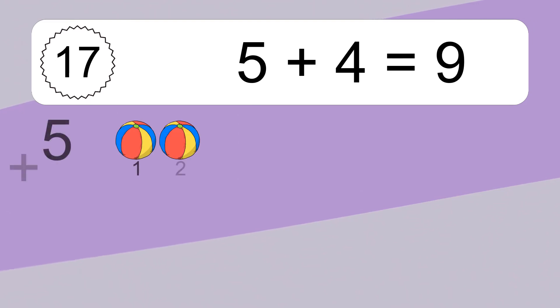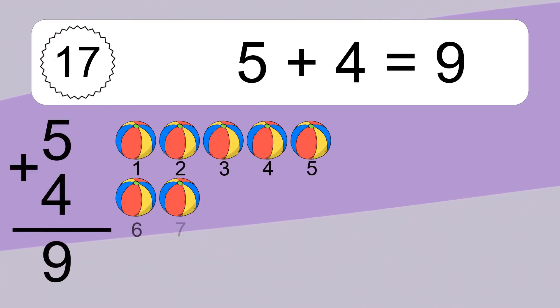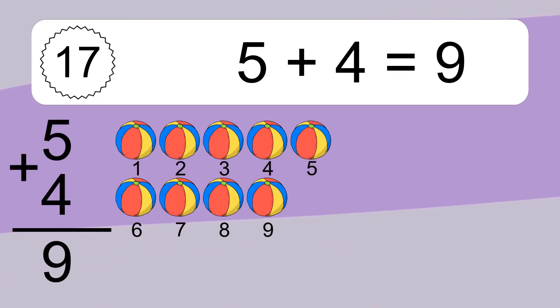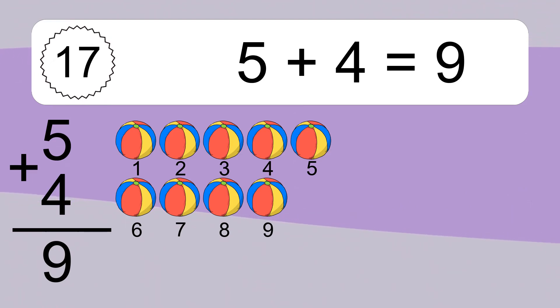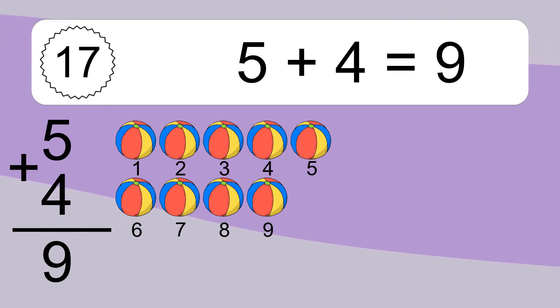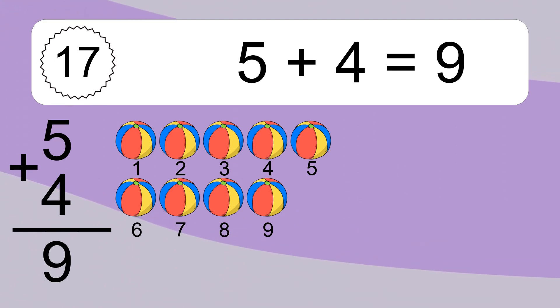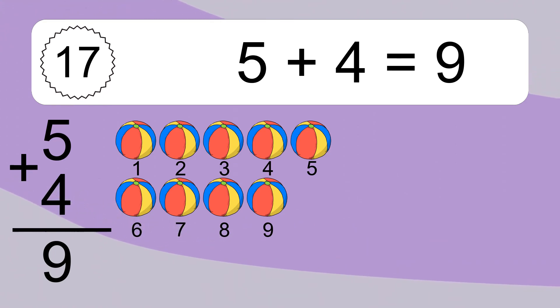5 plus 4 equals what? 5 plus 4 equals 9. Let's count it. 1, 2, 3, 4, 5, 6, 7, 8, 9.